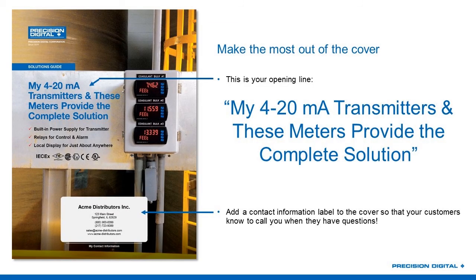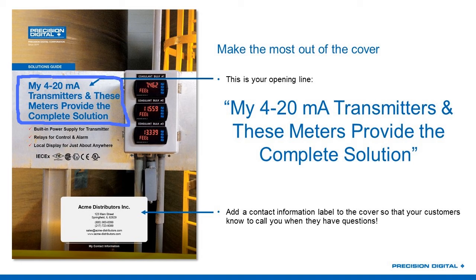Let's start by looking at the cover of this document. You'd be amazed how much work goes into figuring out exactly how to phrase things. The solutions guide itself is actually very, very tiny — we're not calling it a catalog, it doesn't have a giant year on the top because that's not what's going to get your customer's attention. What we want your customer to pay attention to on this cover is this statement: 'My 4 to 20 milliamp transmitters and these meters provide the complete solution.' That is a quote you can read right off the cover to open up the conversation about selling more than just your single transmitter.